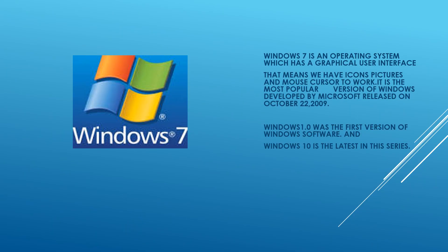In our syllabus we will discuss Windows 7. Windows 7 is an operating system which has a graphical user interface, meaning we have icons, pictures, and a mouse cursor to work with. It is a very popular version of Windows. It was developed by Microsoft and was released on October 22nd, 2009. The first version of Windows was Windows 1.0, and the latest one is Windows 10.